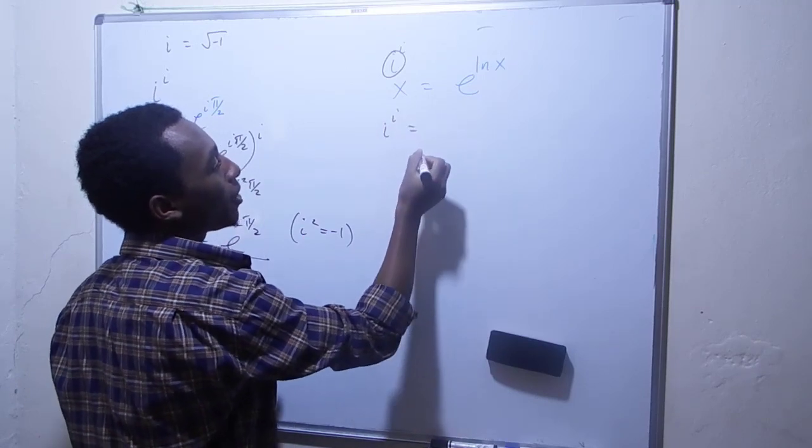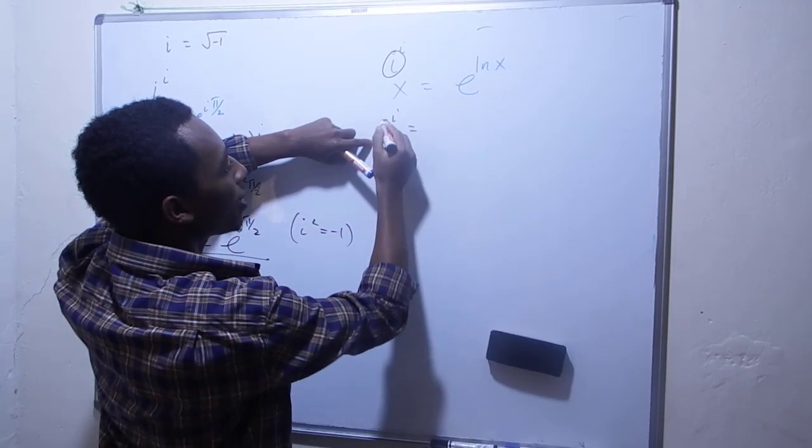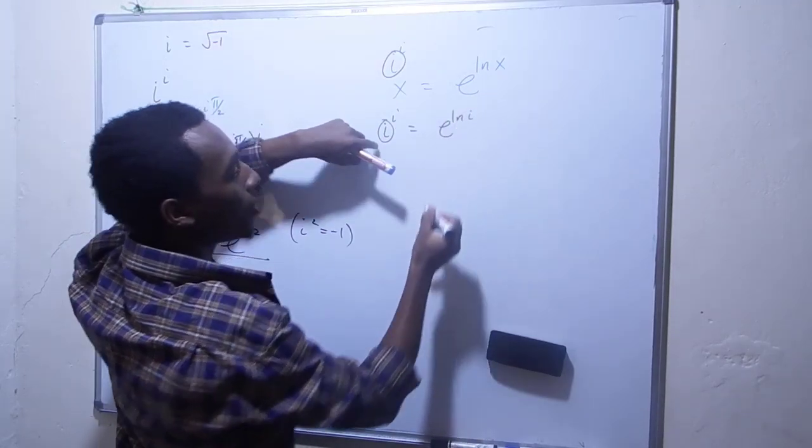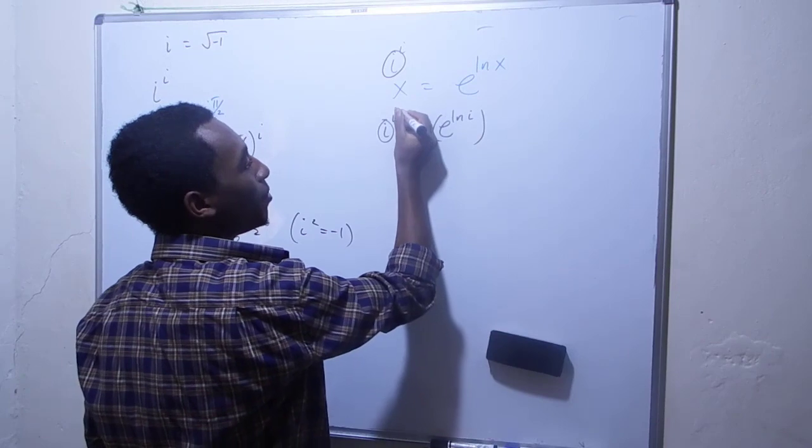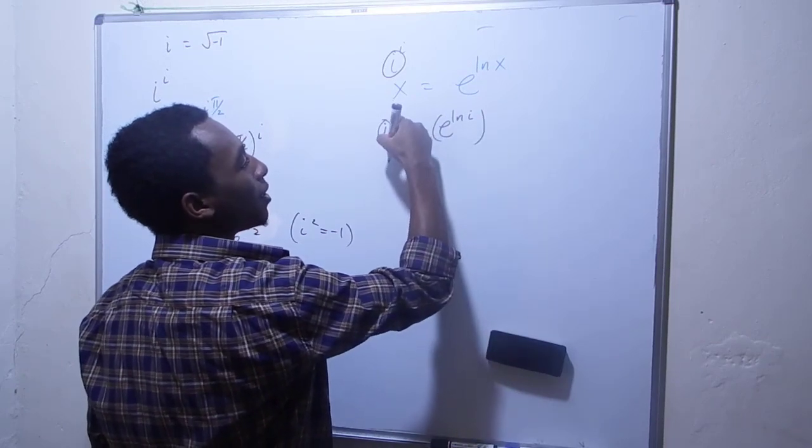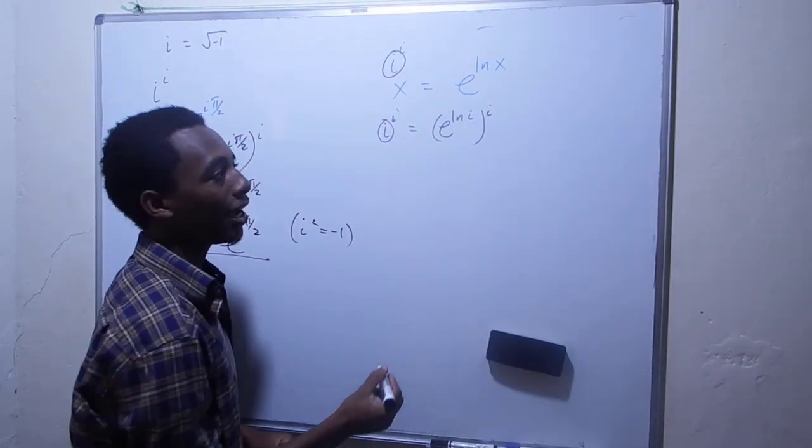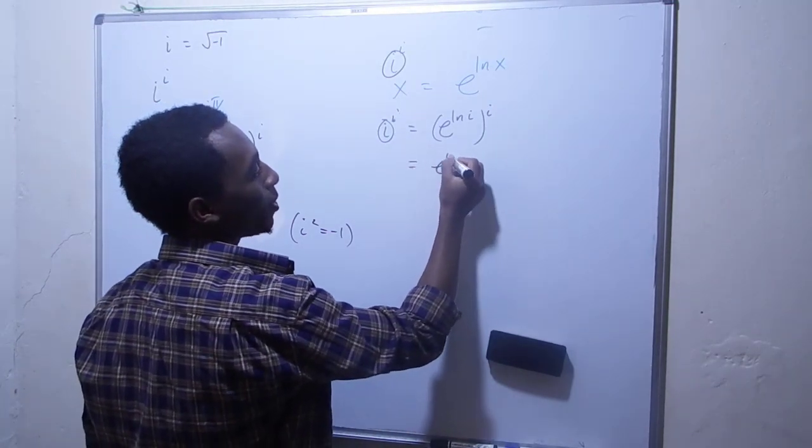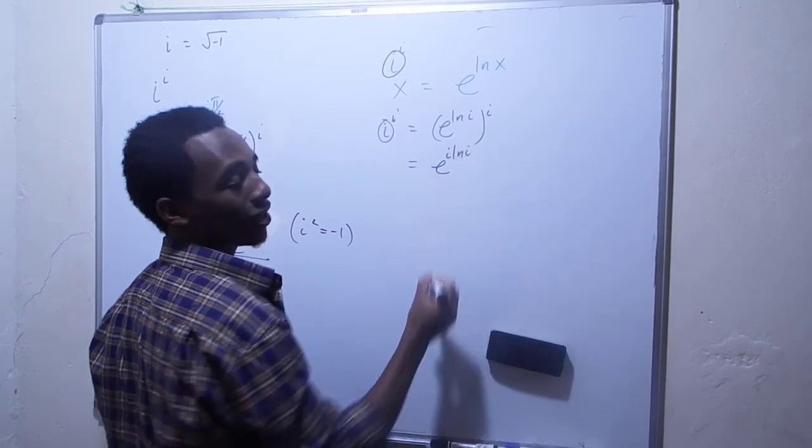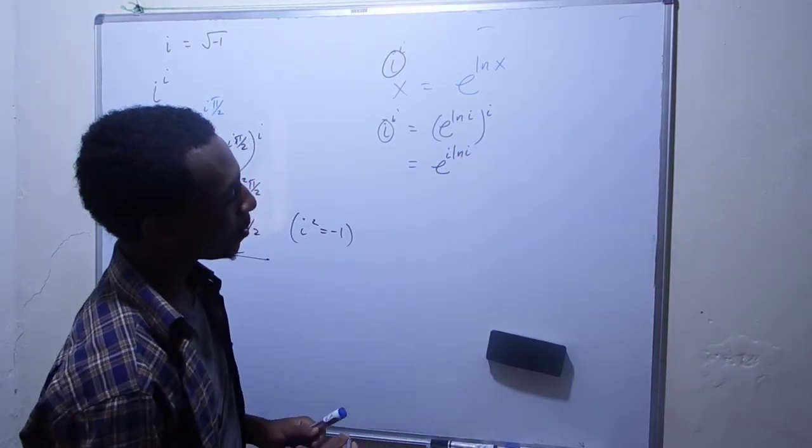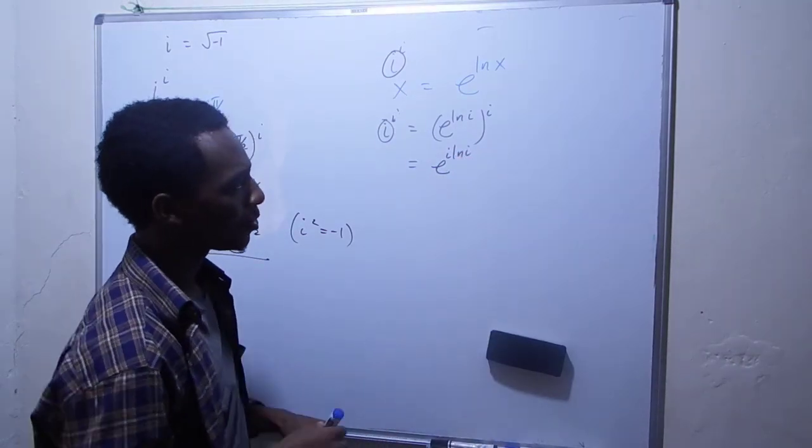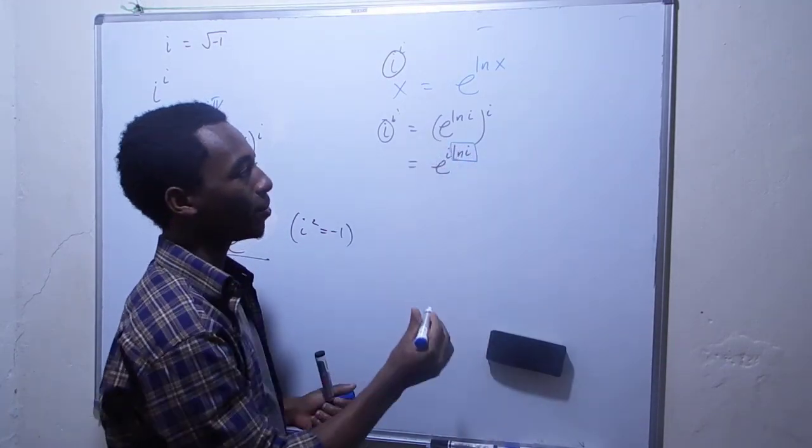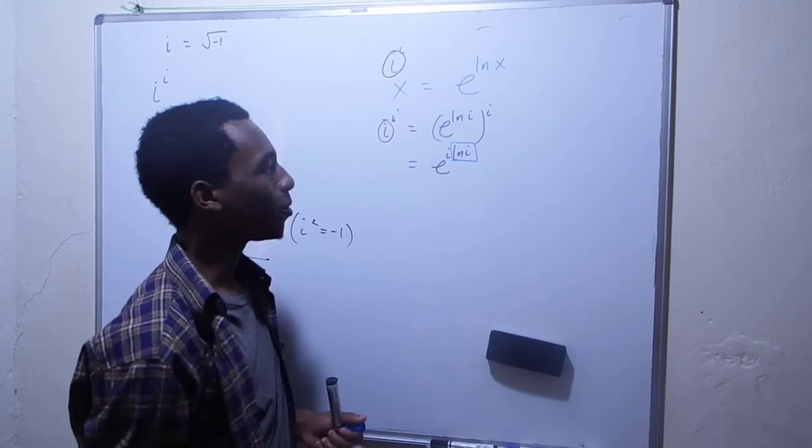So i to the power i equals e to the log of i, all raised to the power i. Multiplying the powers, I have e to the i times the natural log of i. The last thing we need to do is find the natural log of i.